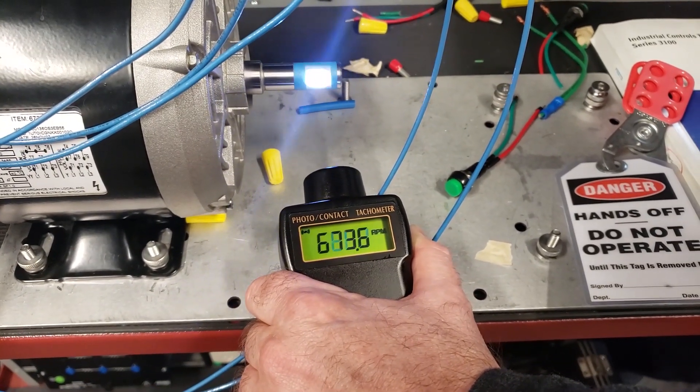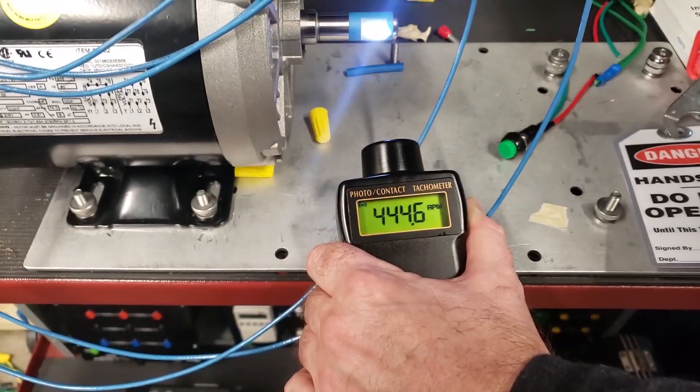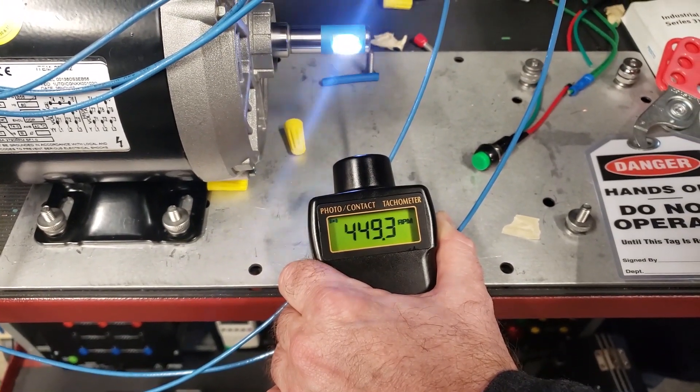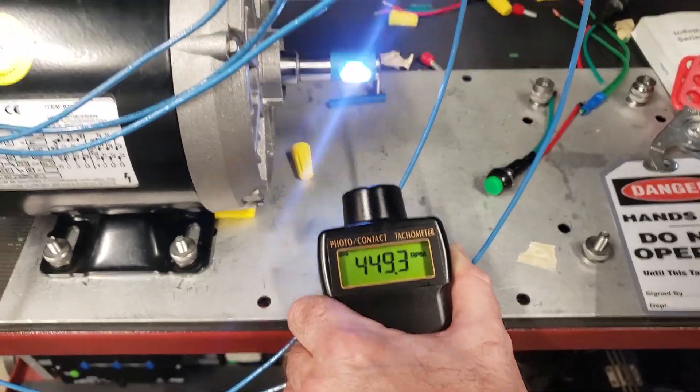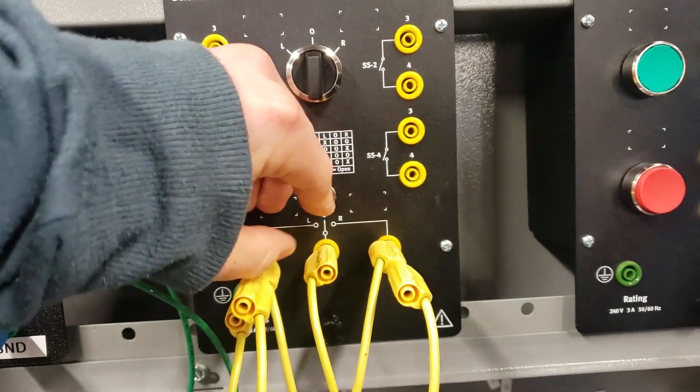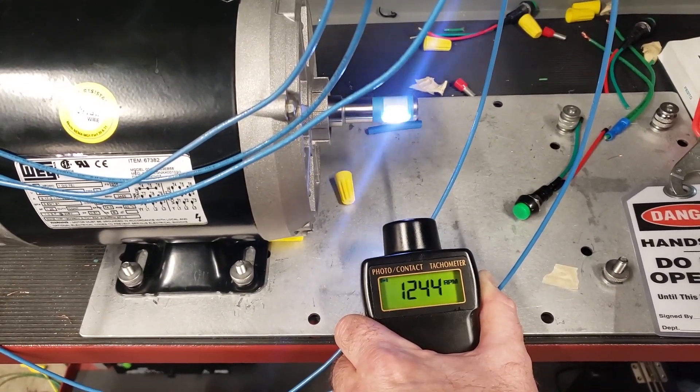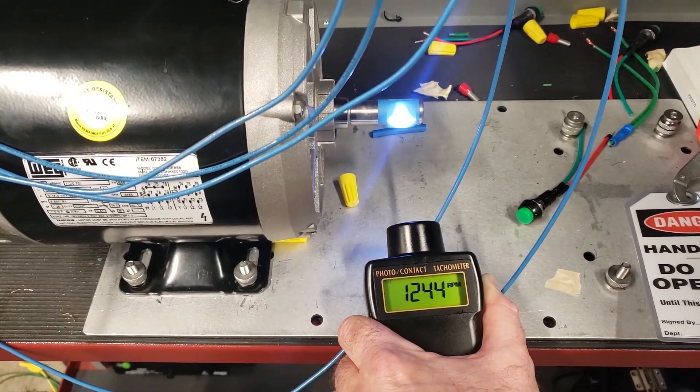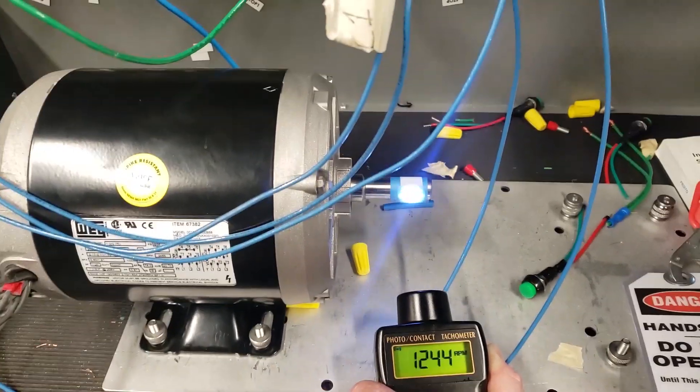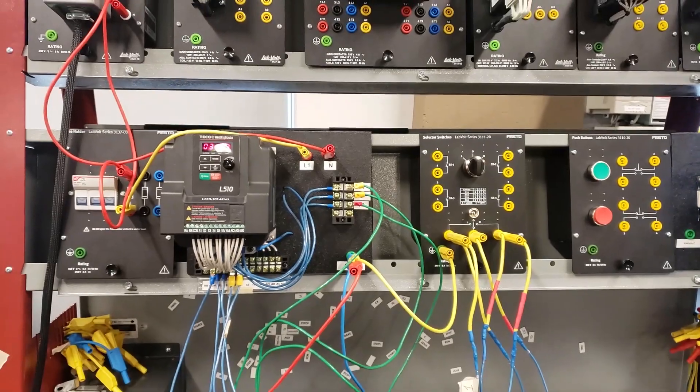We change the frequency and set it to 450. Then we go over here and flip it to forward, and it's set to 1250 RPM, or just about 1250. That is our VFD Part 2.